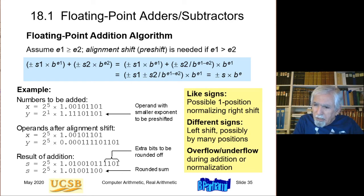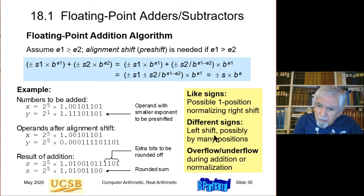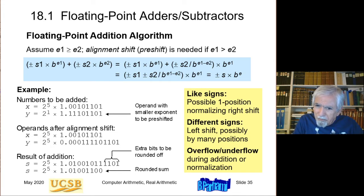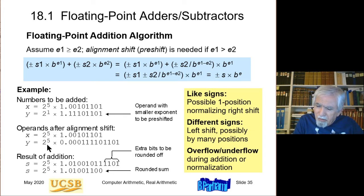We can have overflow or underflow during the addition. When you do the addition you adjust the two exponents to the larger of the two. If this is already the largest possible exponent and you need a normalizing right-shift — making the significand smaller by a factor of two — then you have to increase the exponent by one, and that can lead to overflow.